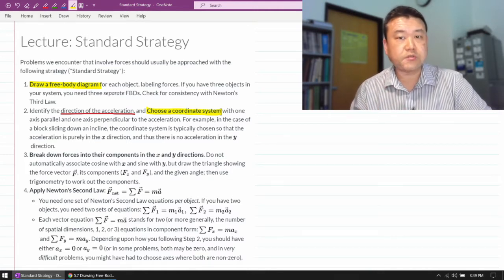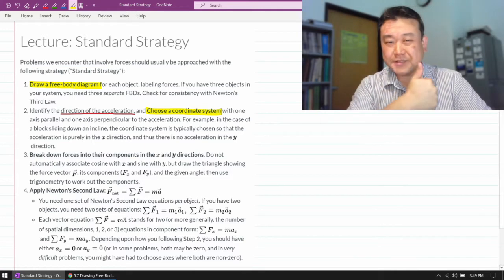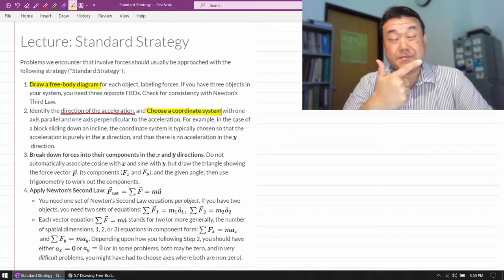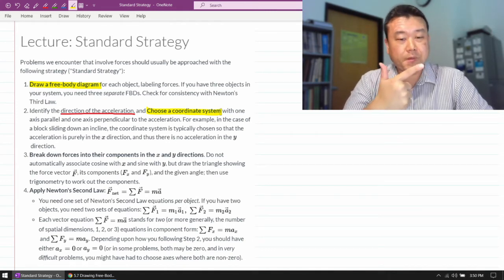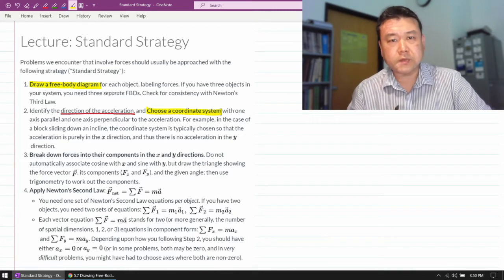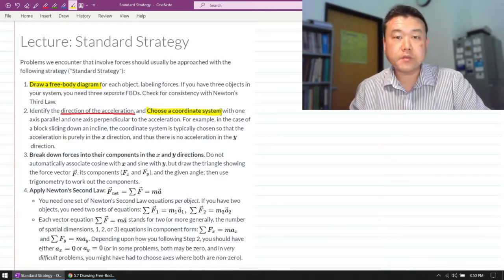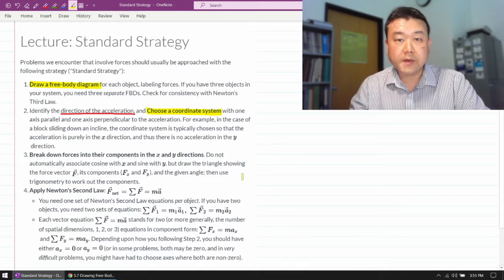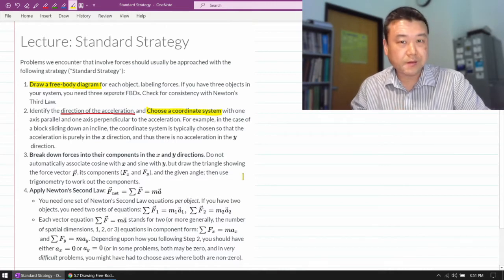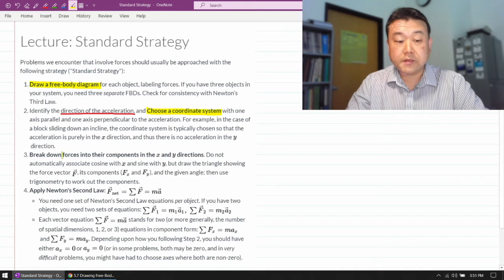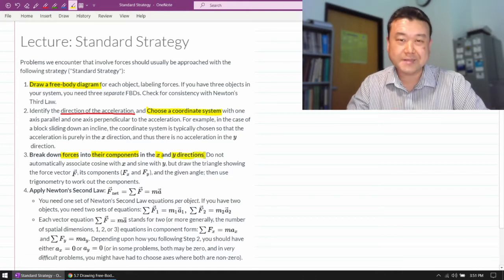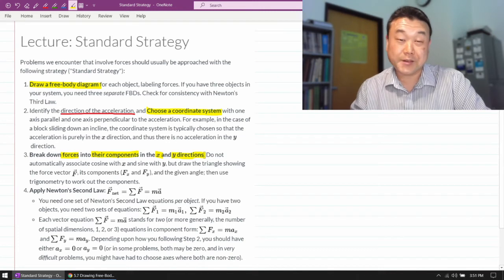There are some special circumstances that you may consider either where acceleration is zero, or there are particularly difficult questions where it might actually be better to have axes pointed another way. But in general, the rest of the problem-solving steps turn out to be easiest when we choose our axes so that the x-axis is parallel to the acceleration. Once we have chosen our coordinate axes, then we do what the coordinate axes are for. It's so that we can describe the forces in terms of their components in the x and y directions.